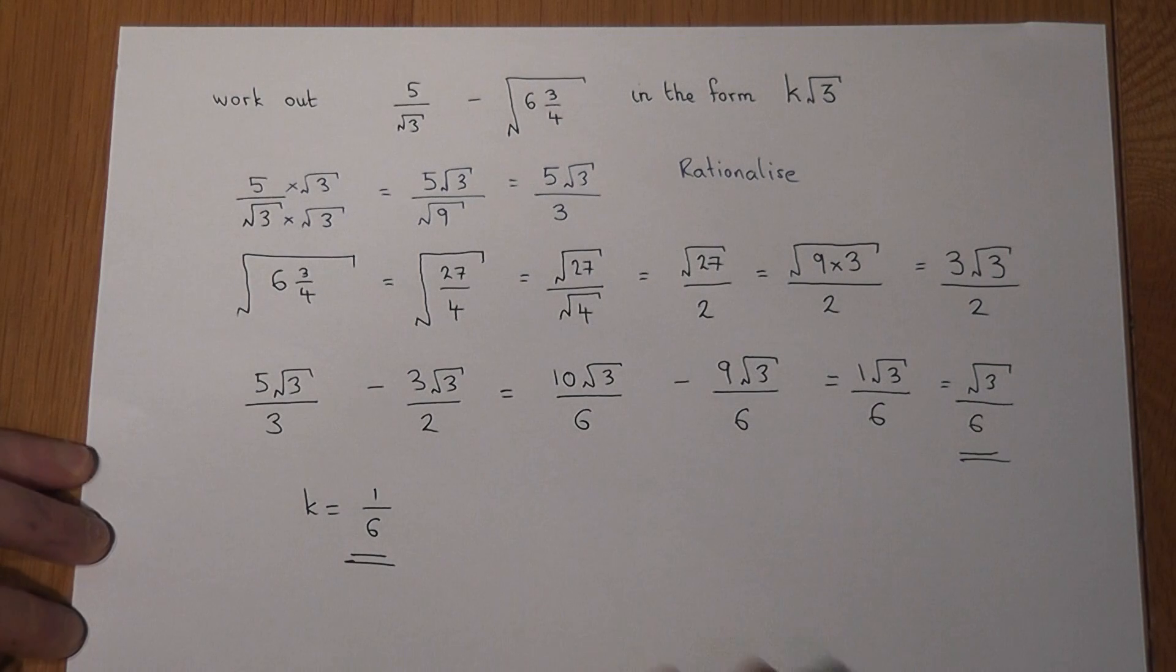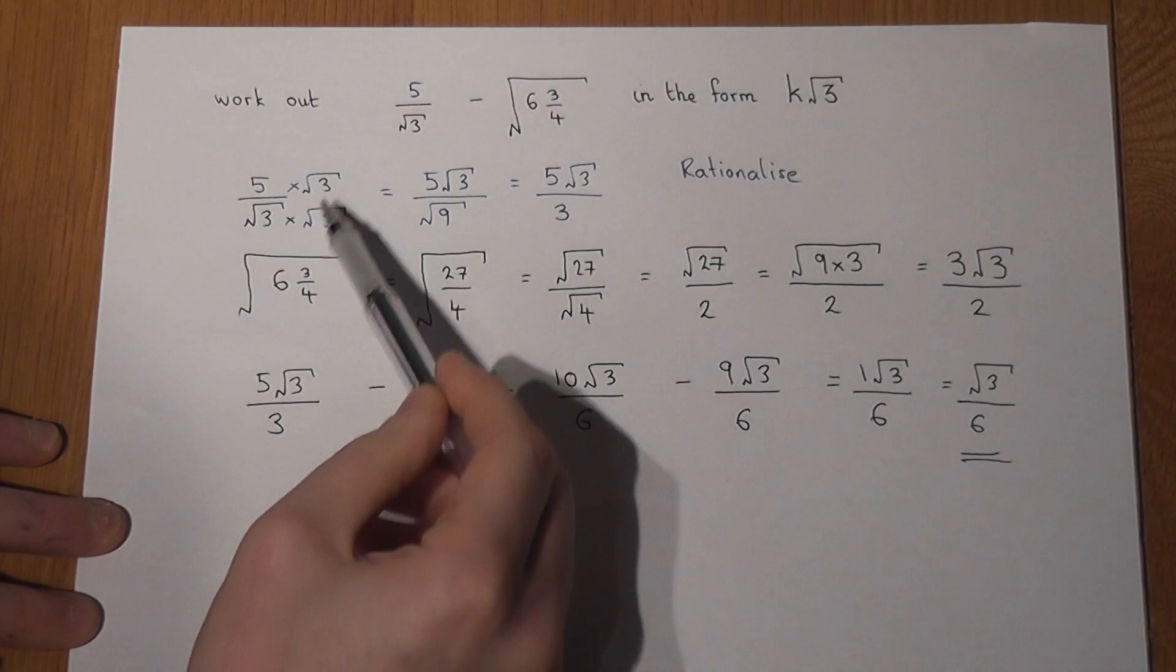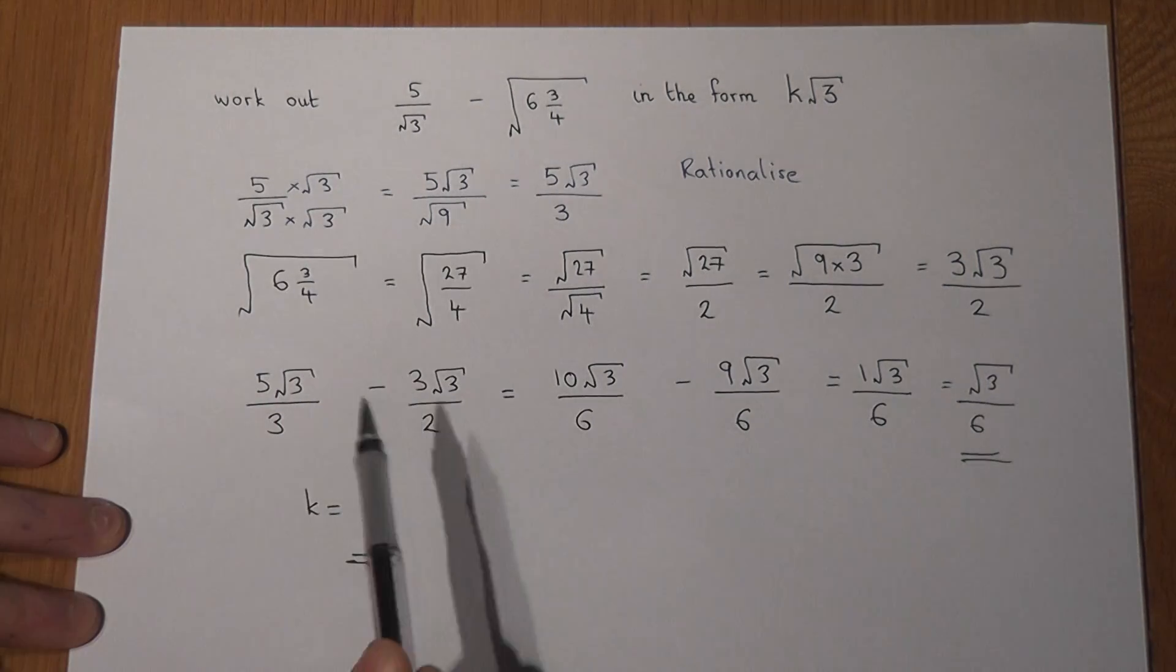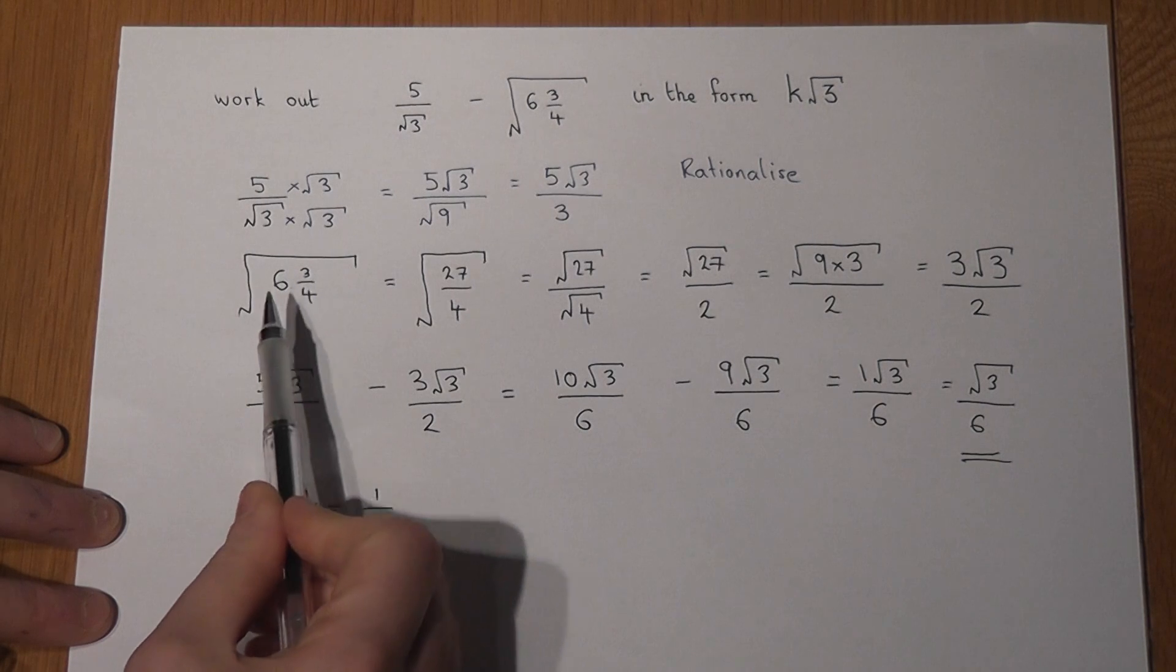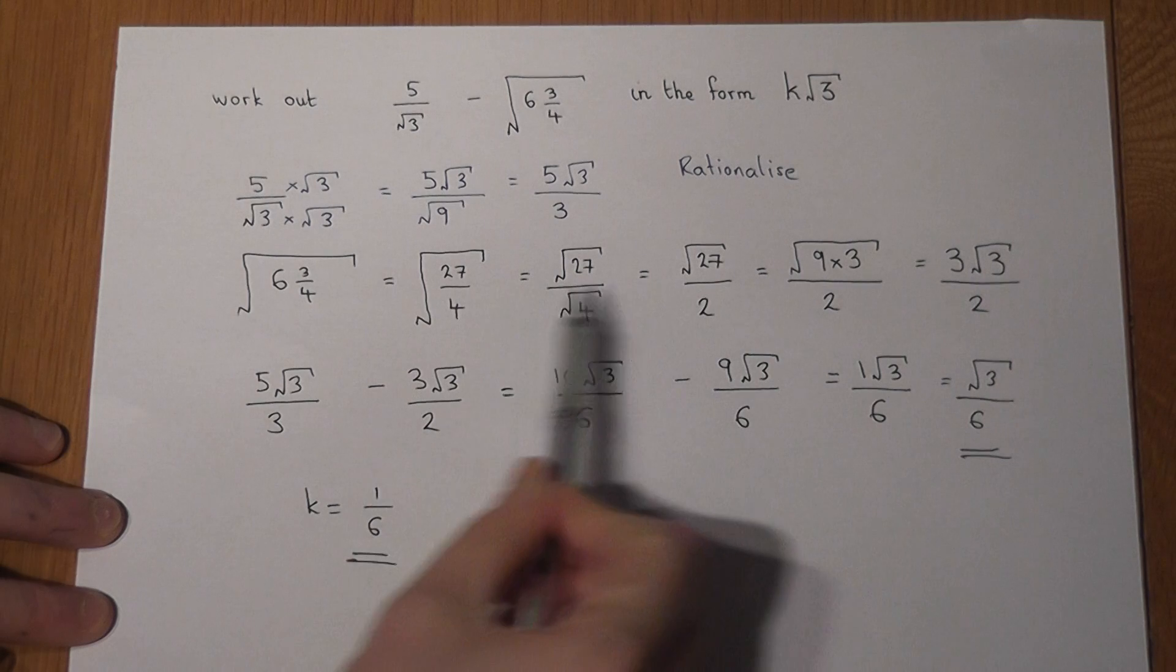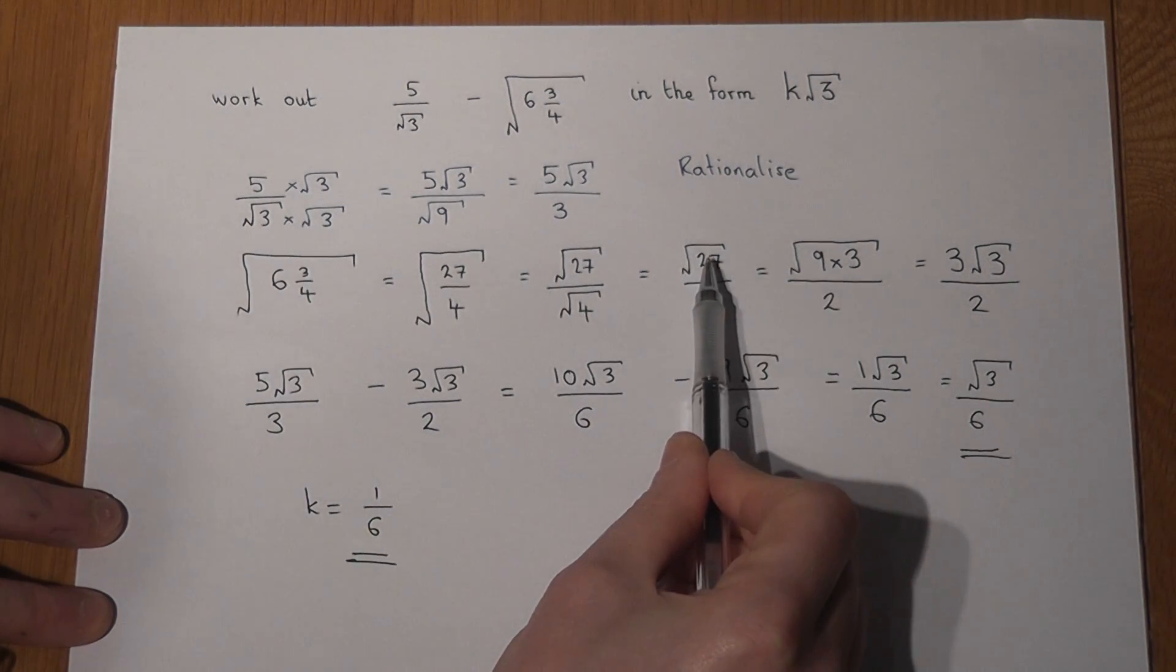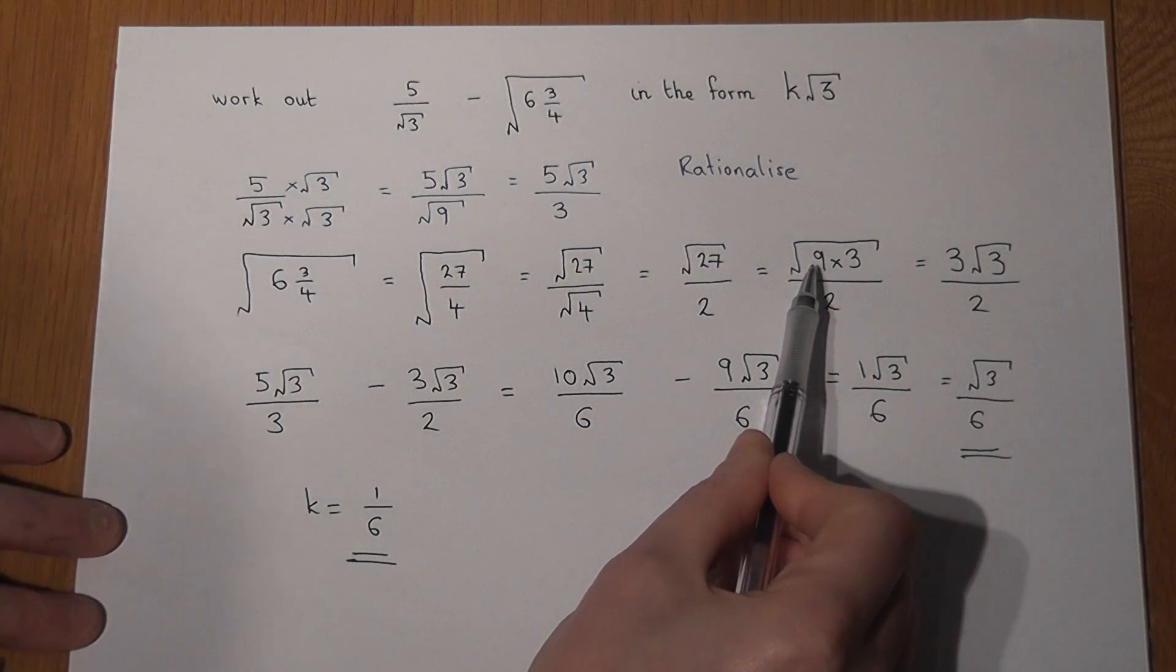And again, a couple of key skills there we revised. One is to rationalize the denominator. We times top and bottom by the surd on the bottom of the fraction. Secondly, we looked at writing a mixed number as a top heavy fraction. And then we simplified the number in the square root by looking for the highest possible square factor.